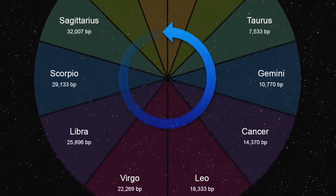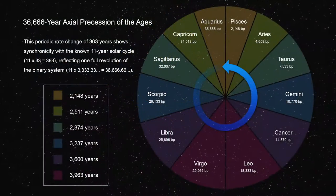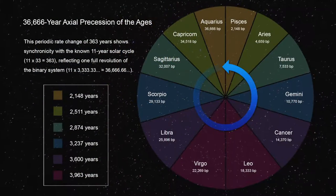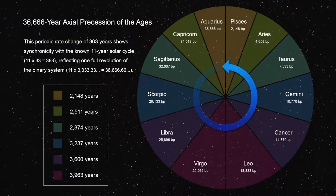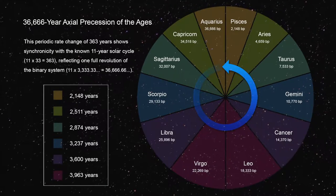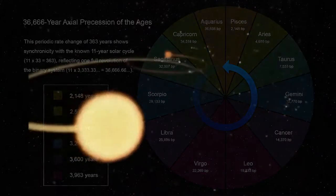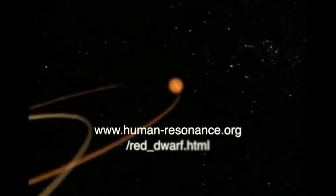This periodic rate change of 363 years shows synchronicity with the known 11-year solar cycle. 11 times 33 equals 363, reflecting one full revolution of the binary system. 11 times 3,333.33 equals 36,666.66.